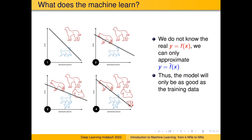Obviously, the more examples we have, the better the model becomes. If you only have one example of a dog, your model will put some boundary between classes that works for those examples but not for more. The more examples you add, the better and better that boundary becomes — that is why large datasets are so important. The bigger and more realistic your dataset, the better your approximation.